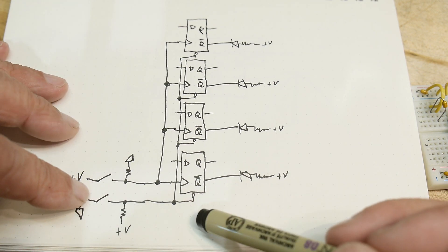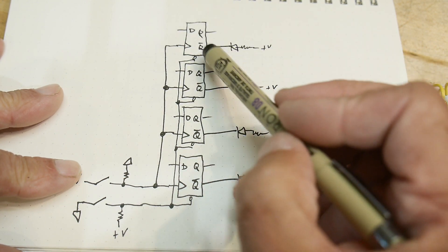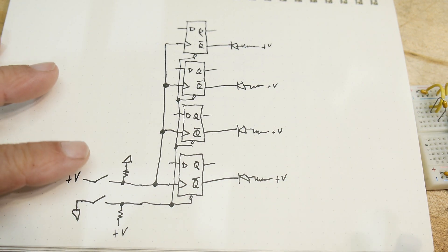All right. So, when we hit the clear function, then all the Qs will be zeros, and the not Qs will be one, and the LEDs will be off.